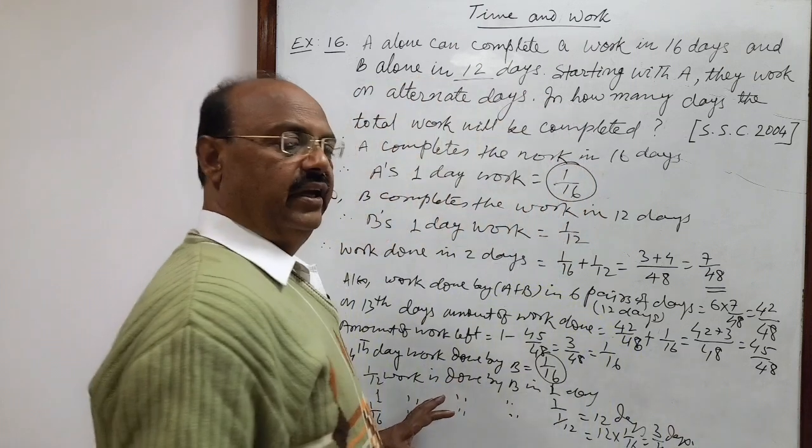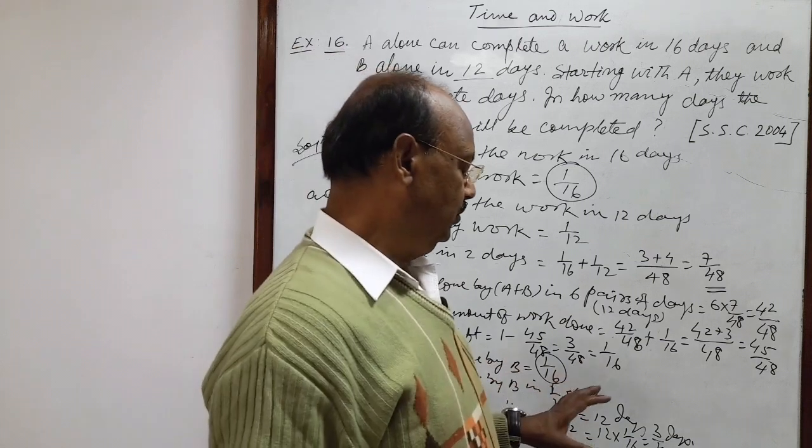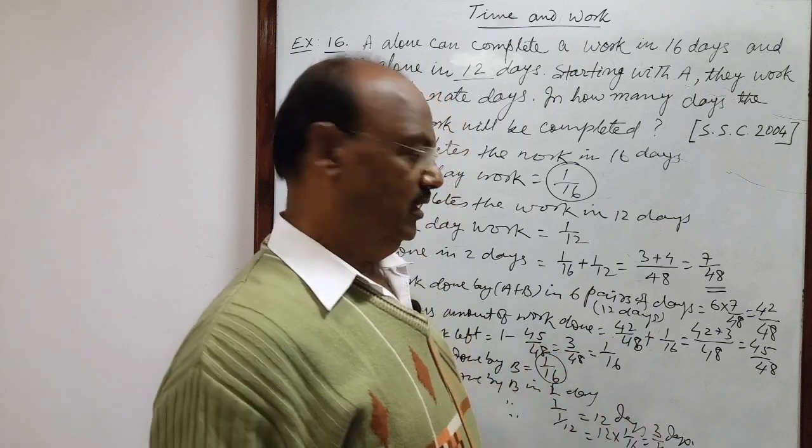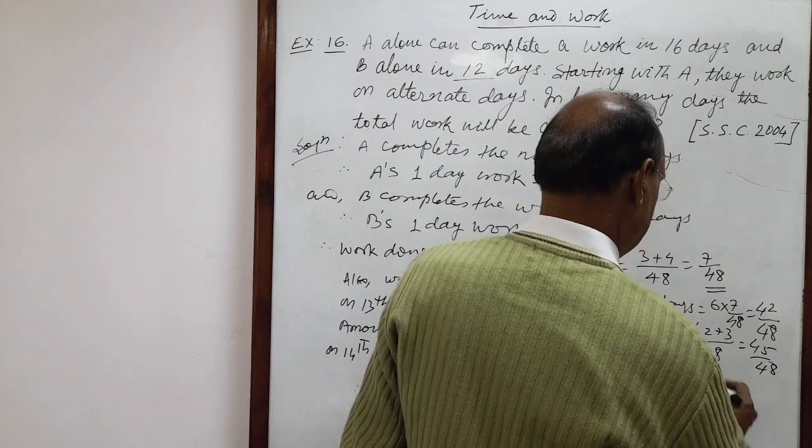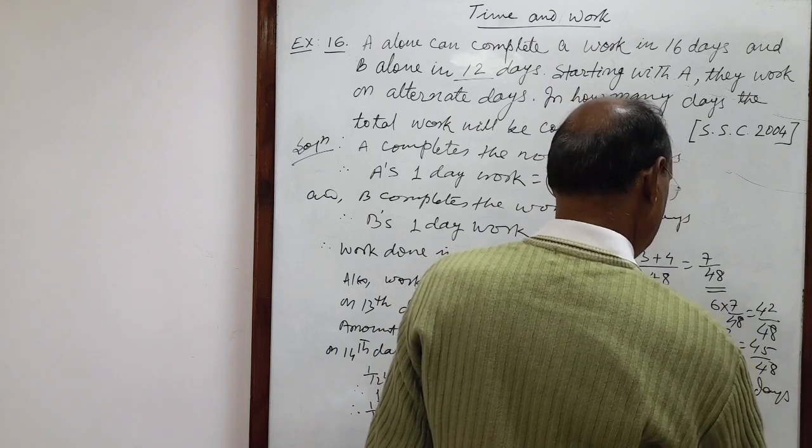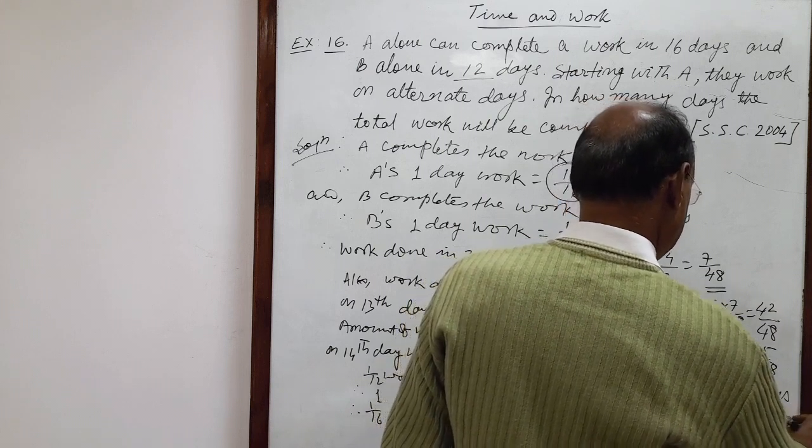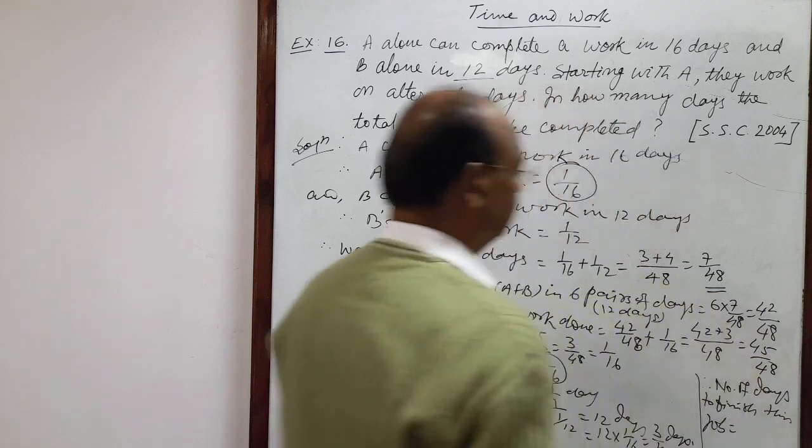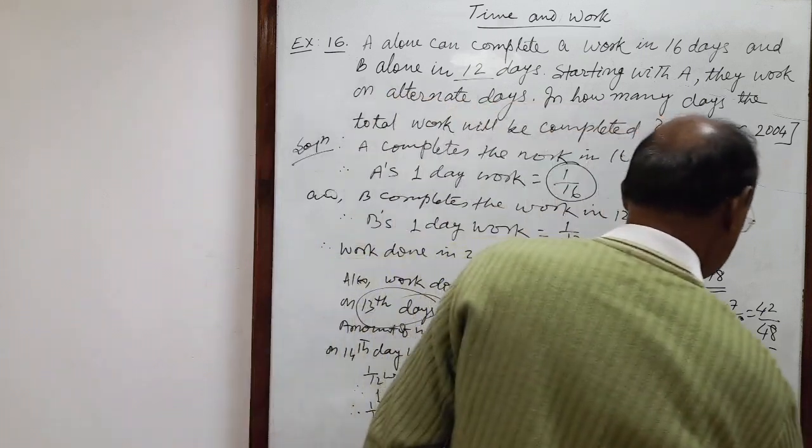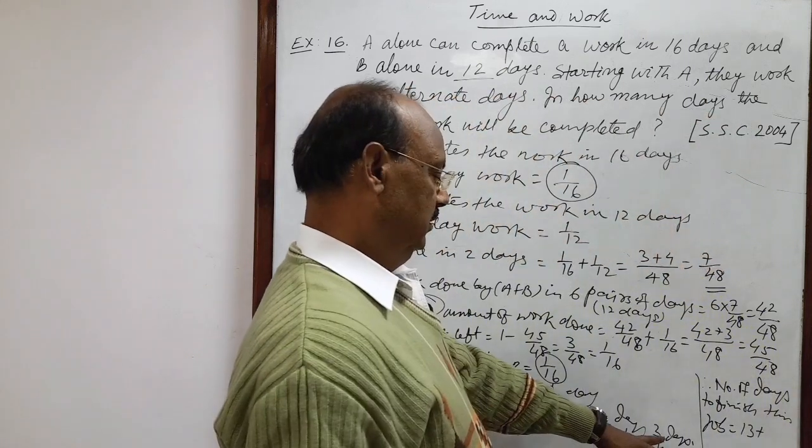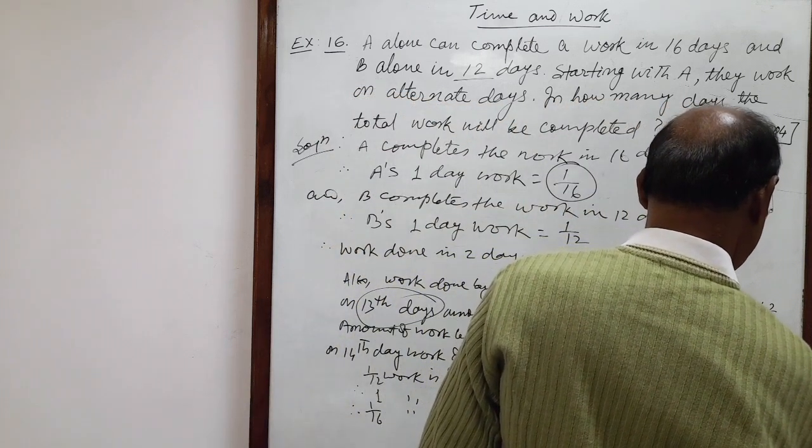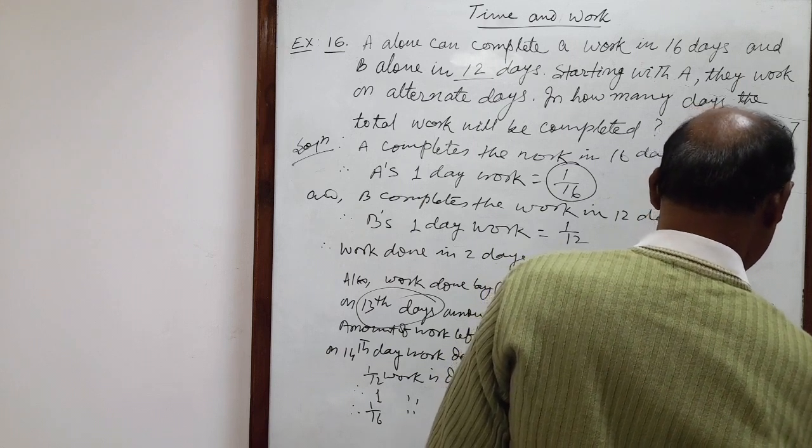On 14th day, B is required to do this work and finish this work in 3/4 days only. Therefore, number of days to finish this job is equal to 13 days has been completed already, so 13 plus 3/4. 13 and 3/4 days, this is the answer.